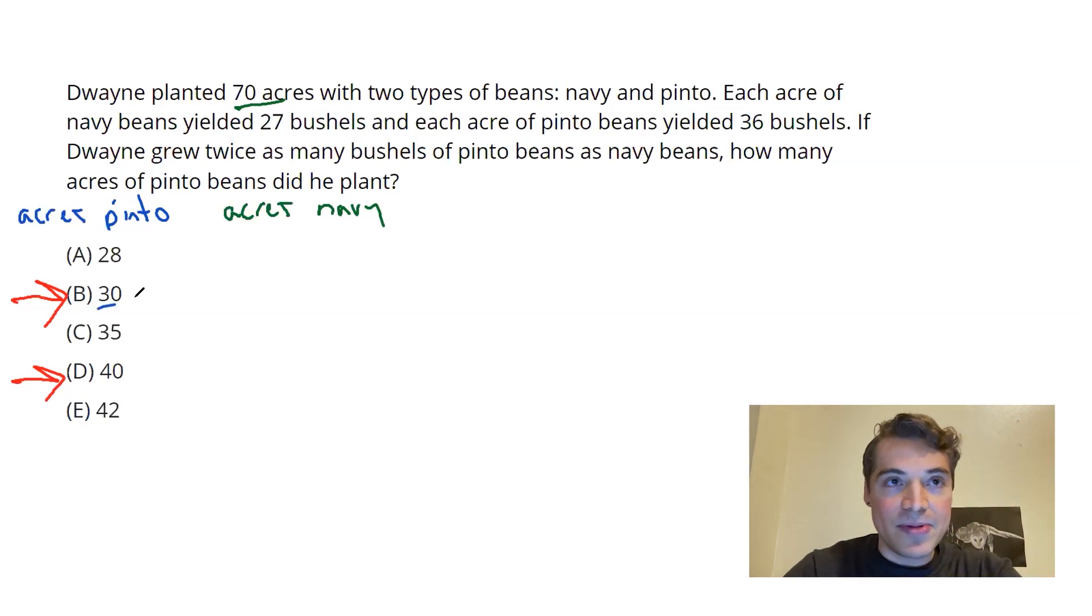If I have 30 acres of pinto to get to 70 total acres, I would need 40 of navy. From there, I've got to think about my totals. I've got these bushel counts coming in. My total pinto, that's going to be the 30 acres I start with.